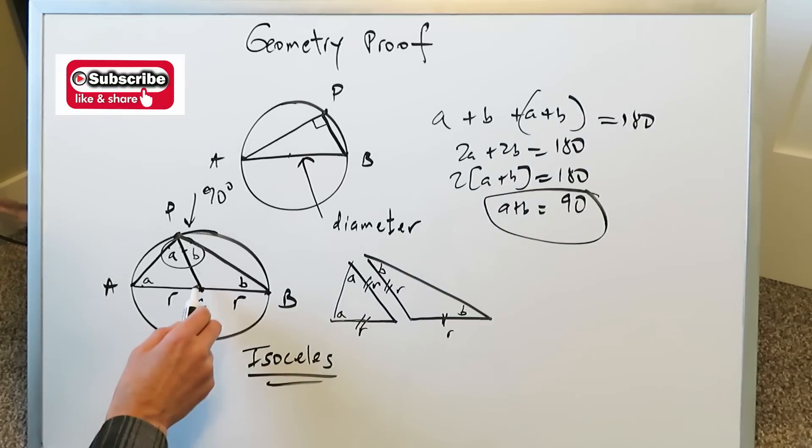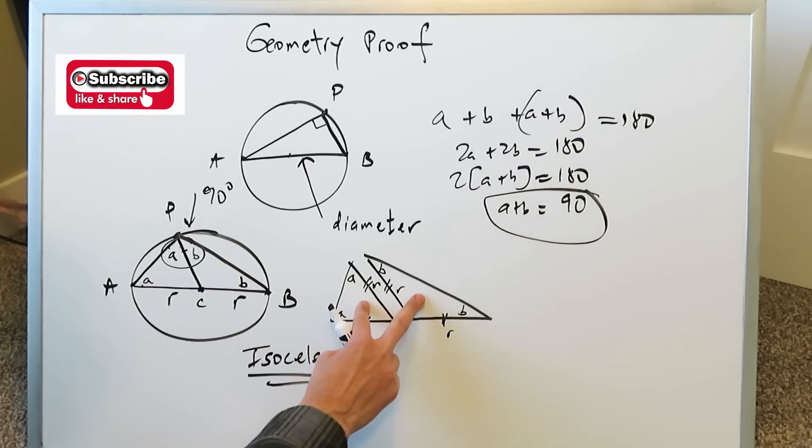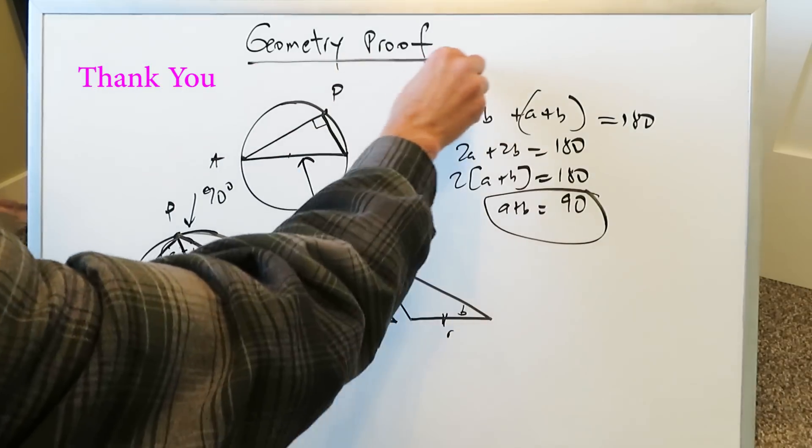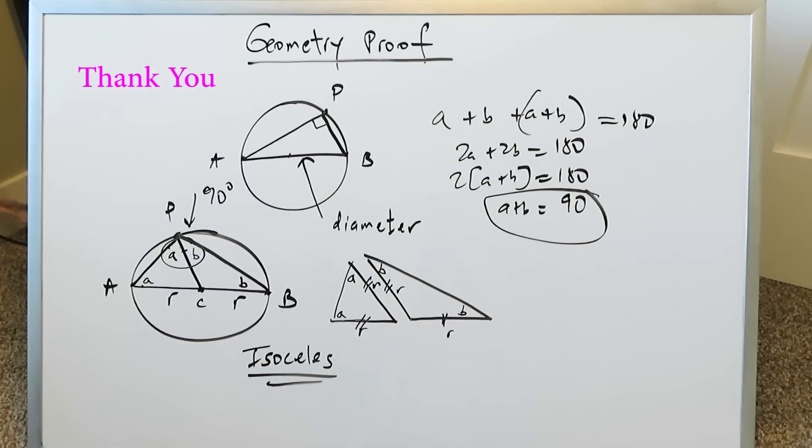And it's 90 degrees because when you draw this extra line here, an extra radius, you essentially form two isosceles triangles. Then you know we have two equal sides, two equal angles, and we go from there. This proof has been done for you. Remember again, there's more than one way of doing this. I'm only showing you one way, a simplified way. Thank you for watching. Have a nice day.